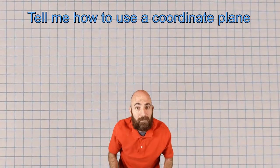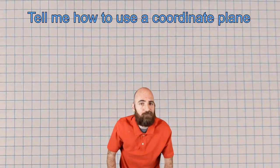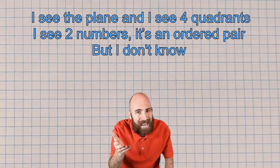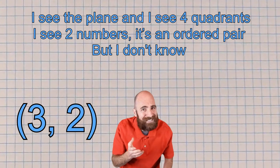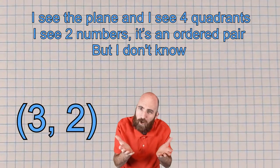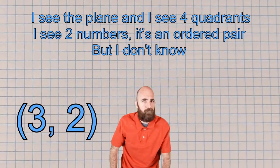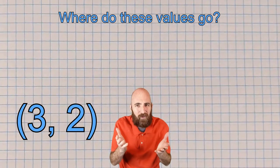Tell me how to use a coordinate plane. I see the plane, and I see four quadrants. I see two numbers, it's an ordered pair, but I don't know where do these values go.